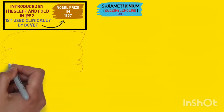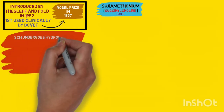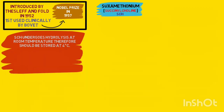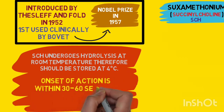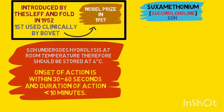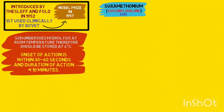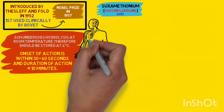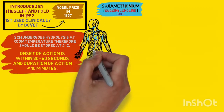Succinylcholine should be stored at 4 degrees centigrade because it undergoes hydrolysis at room temperature. The onset of action is rapid, within 30 to 60 seconds, and the duration is usually less than 10 minutes. Because of this early onset and short duration, succinylcholine is the ideal muscle relaxant for intubation.